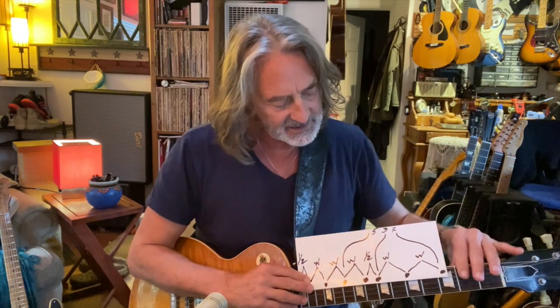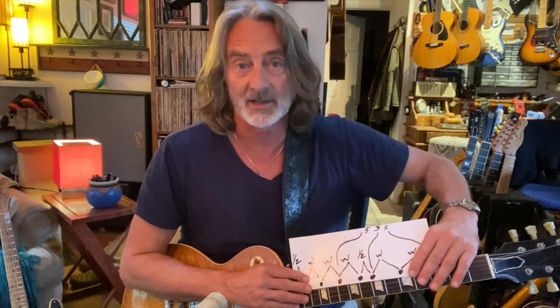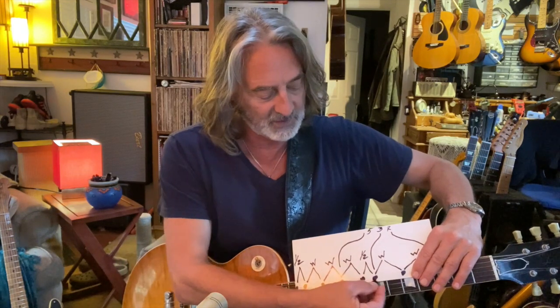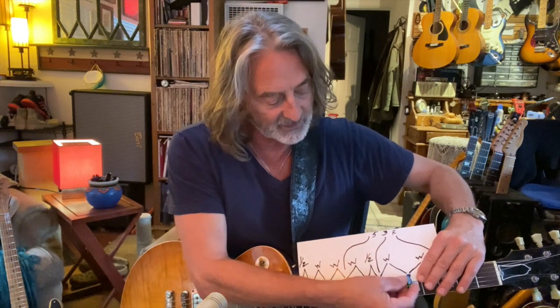So now let's look at the C scale. On this graph, the C is kind of whited out. Our new root is on the D, and we have a new third — we're sticking with the same template, not moving it around, just starting in a different place. Then you can see there's a whole step and a half step, which makes it a minor chord. Any formula to get a chord out of a scale: take the 1, 3, 5, and 7. So there you go — the second mode of C major is D minor.